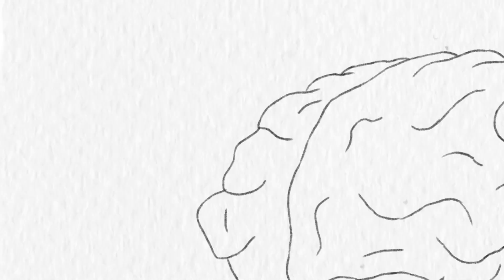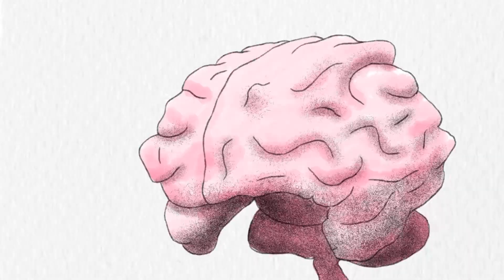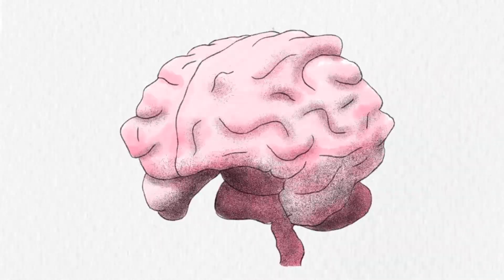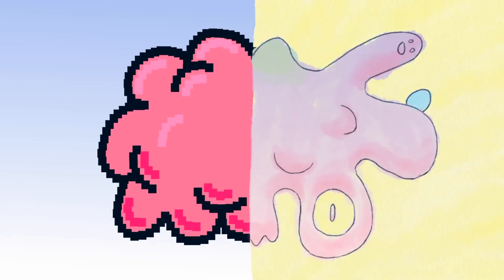Behold the human brain, its lumpy landscape visibly split into a left and right side. This structure has inspired one of the most pervasive ideas about the brain: that the left side controls logic, and the right, creativity.